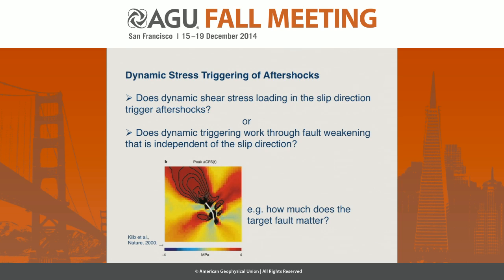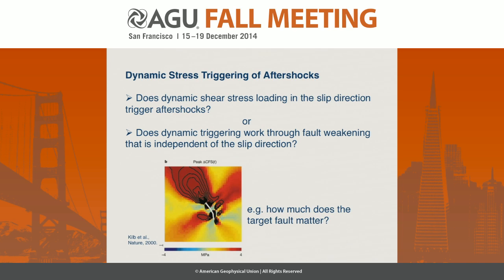The question for forecasting aftershocks is: if we want to make a diagram like this one from Debbie Kilbin and others looking at the peak dynamic Coulomb stress change, do we actually need to do this? Do we actually need to know what the target faults are, or do we just need to map out what the distribution of the maximum dynamic stresses are?